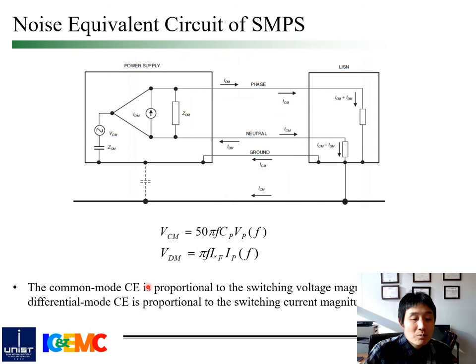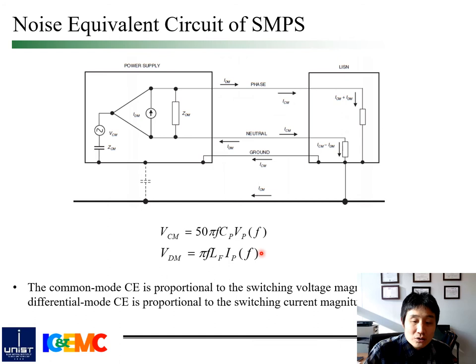Finally, the noise source model of common mode and differential mode conducted emission can be combined and summarized. We can understand that common mode CE is proportional to switching voltage magnitude and parasitic capacitance of the heat sink or winding. On the other hand, differential mode CE is proportional to switching current magnitude and the non-ideal impedance of the DC link capacitance.